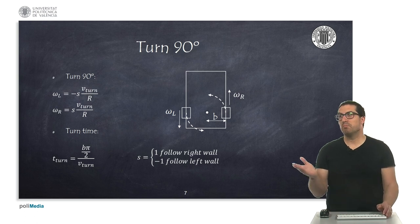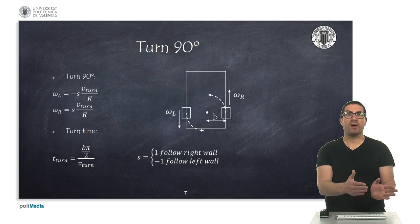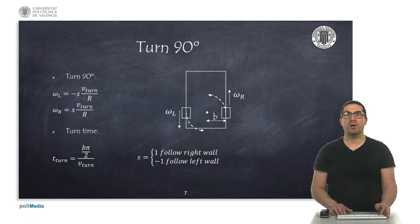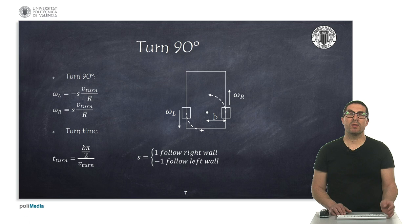Whatever error we have in the end after completing this turn will be actually corrected with the wall-following algorithm. So that's, in principle, not a major inconvenience.